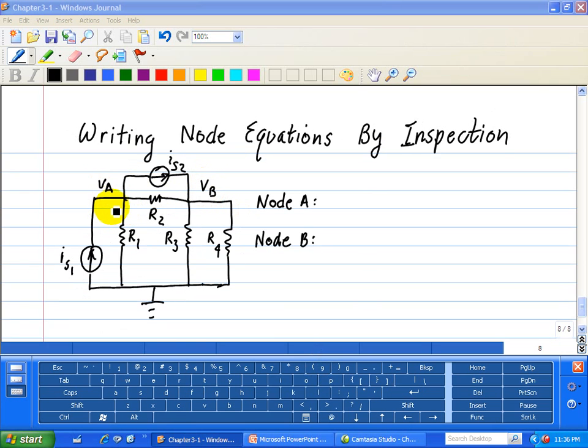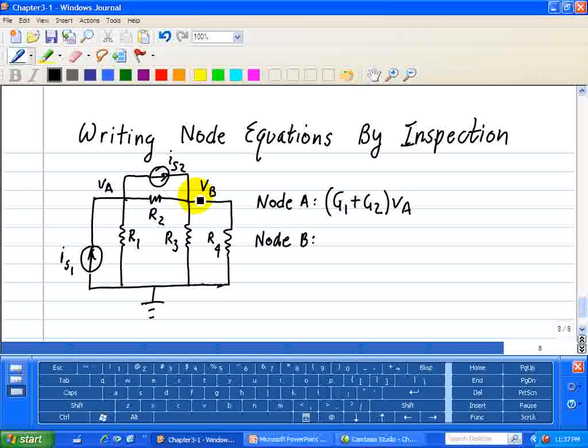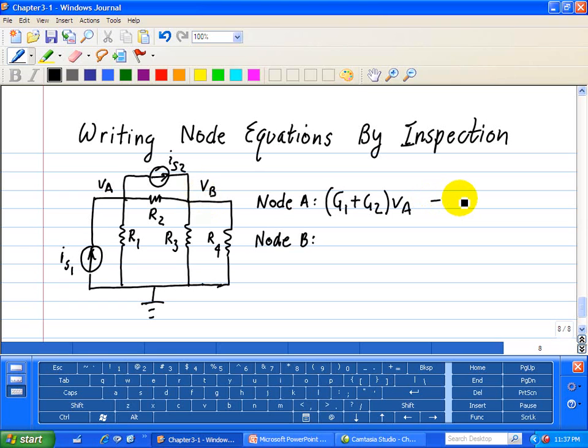So we see again what's connected to node voltage A. We have R1 and R2, so we have G1 plus G2 times VA. Now what's connected to VA? At the opposite of R2 is basically VB. So we have minus G2VB, and that's equal to,